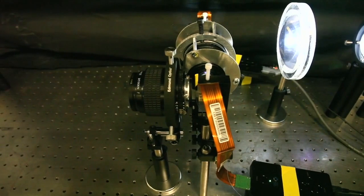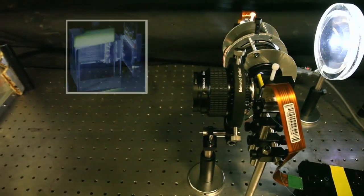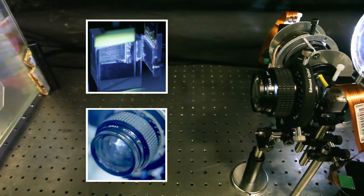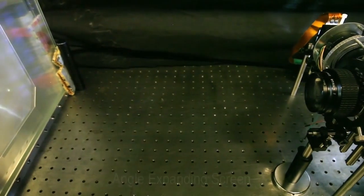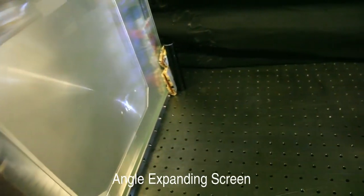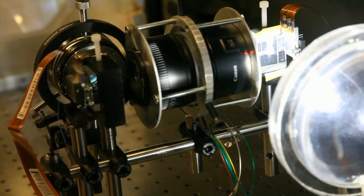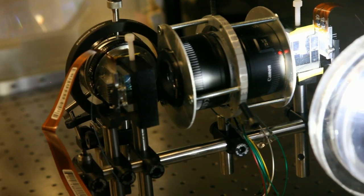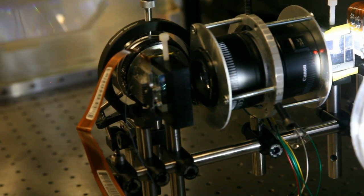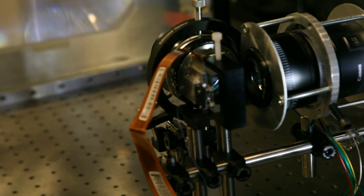Our prototype consists of a custom illumination path and two spatial light modulators behind a projection lens. These SLMs are imaged onto the angle-expanding screen. In order to accommodate reflection mode L-COS modulators, we incorporate two polarizing beam splitter cubes and a relay lens into the optical path.